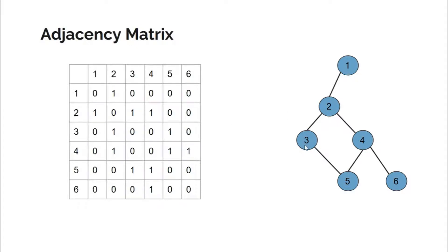To count how many edges a node has, all you have to do is go to that row and count the number of 1s in that row. For example, to count the number of neighboring nodes of node 4 — which are 2, 5, and 6, so three neighbors — all you have to do is go to row 4 and count the number of 1s present in that row.